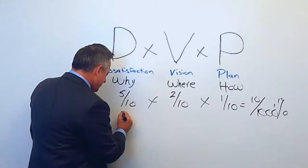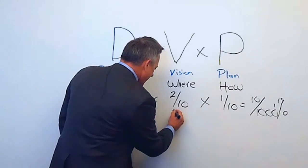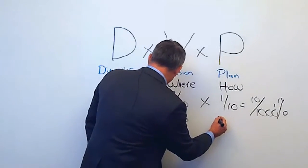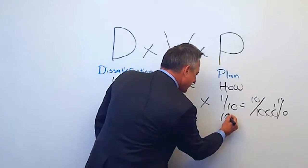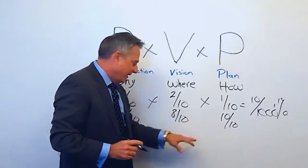If we can get this to say an eight out of ten on the dissatisfaction, maybe an eight out of ten on the vision, and let's just say we have a ten out of ten idea of where we're going to be on the plan. We get a very clear plan.